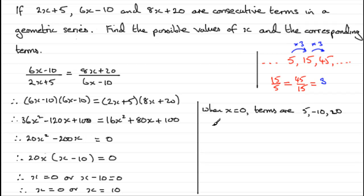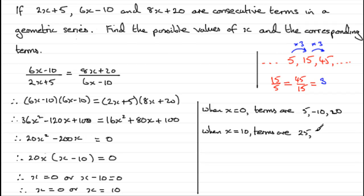When x equals 10, the terms are: 2 times 10 plus 5 is 25; 6 times 10 minus 10 is 50; and 8 times 10 plus 20 is 100. You can see that these terms form part of a geometric series — in the first case we're multiplying by minus 2 as the common ratio, and in the second case we're multiplying by 2.